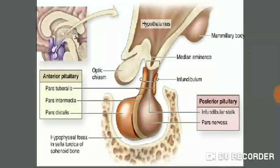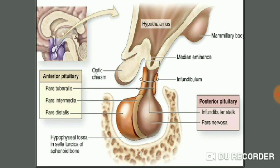In this picture we see that the pituitary gland is divided into the anterior pituitary, the posterior pituitary, and the intermediate lobe, also known as pars intermedia. The anterior pituitary is divided into two portions: pars tuberalis and pars distalis, while the posterior pituitary is also called pars nervosa. The intermediate lobe is less developed in higher vertebrates but well developed in lower vertebrates.